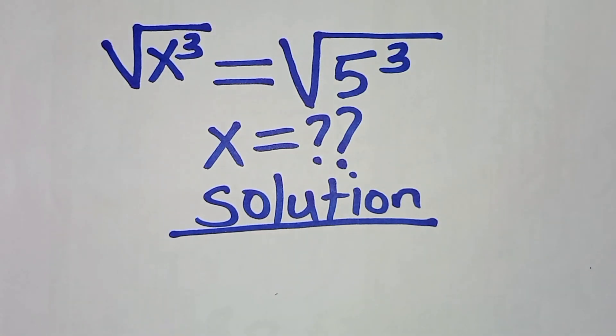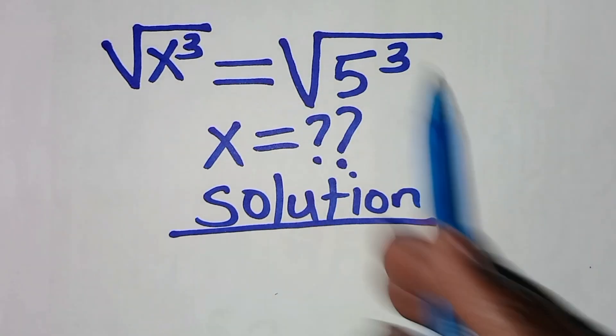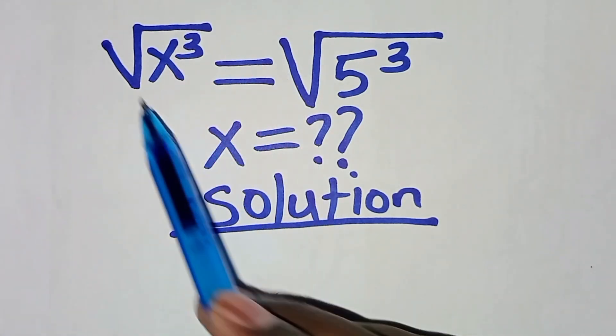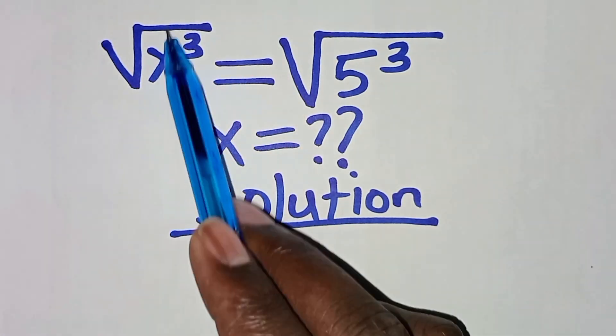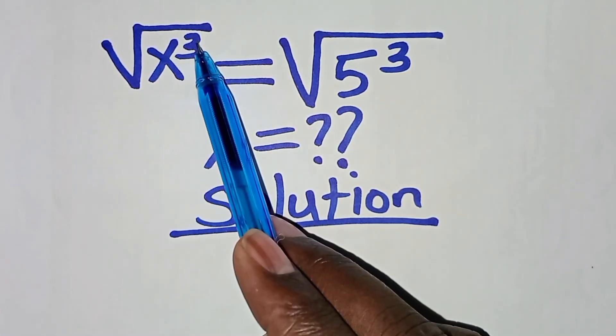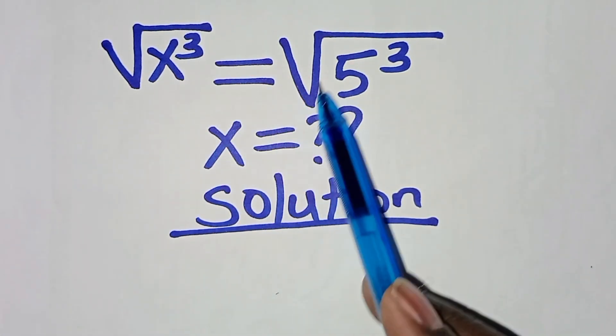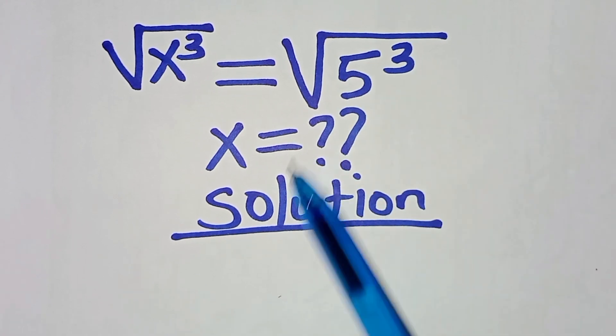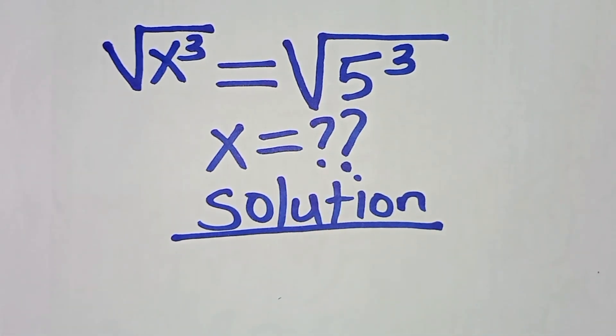Hello everyone, welcome to this solution for a nice square root math problem: the square root of x cubed is equal to the square root of 5 cubed. What is the value of x?